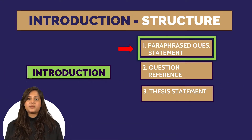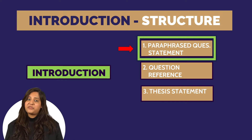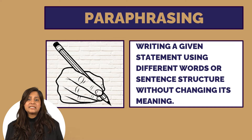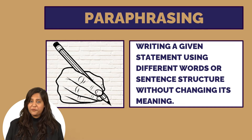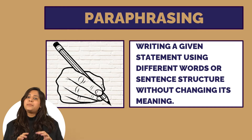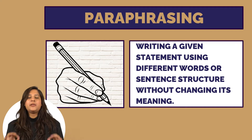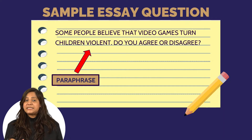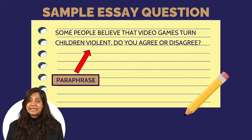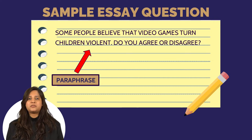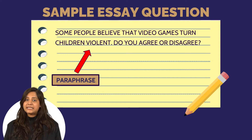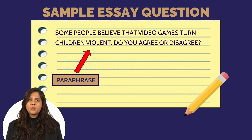Let's write an introduction to this question. First, we need to begin with a paraphrase statement. Paraphrasing is writing a given statement using different words or phrases in a new way, while making sure that its meaning remains intact. For the first statement of the introduction, we need to paraphrase the topic sentence: 'Some people believe that video games turn children violent.' You can pause the video here if you want to try it yourself first.